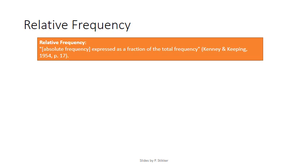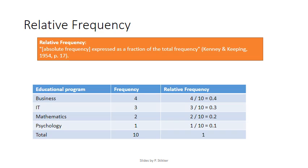Absolute frequency can therefore be defined as the number of occurrences of a particular phenomenon. It shows how many scores have that particular value.